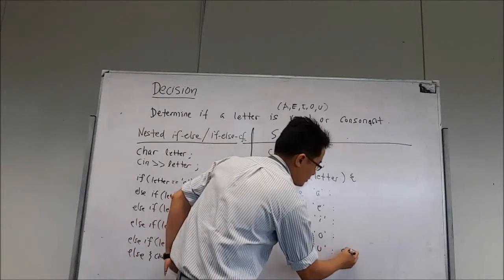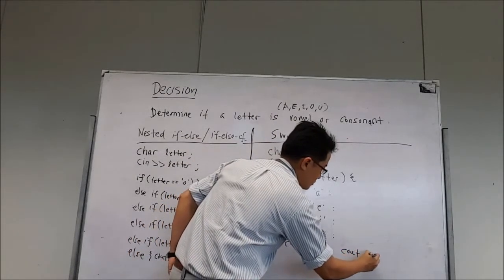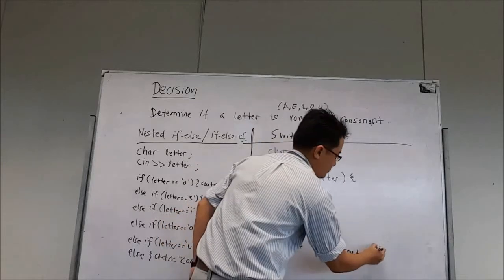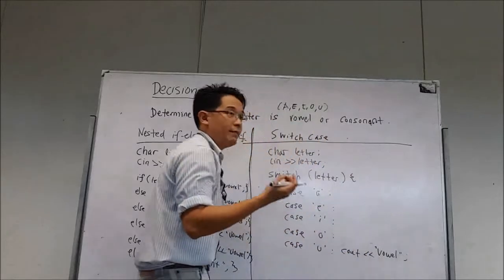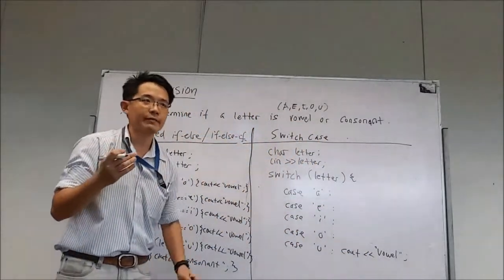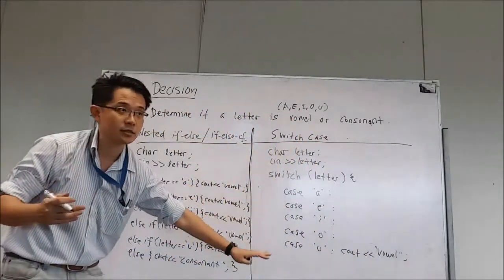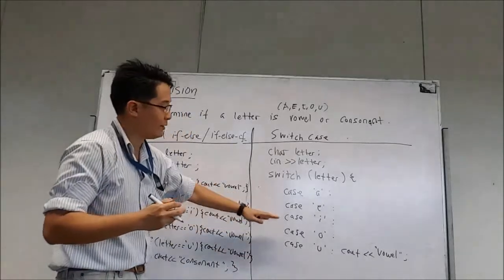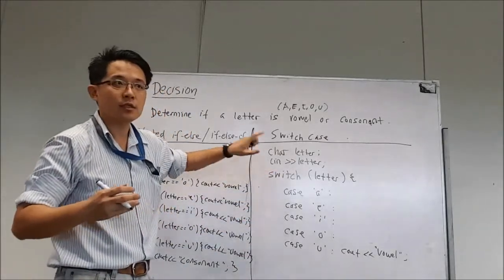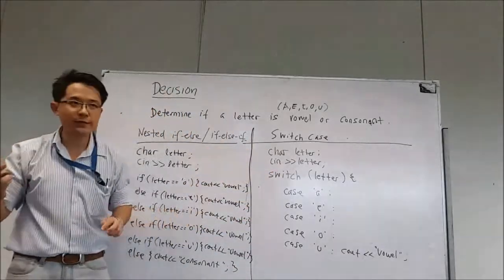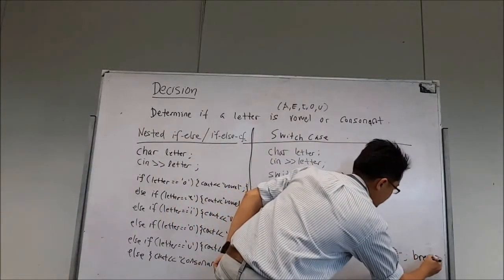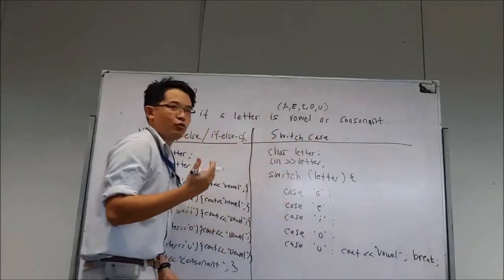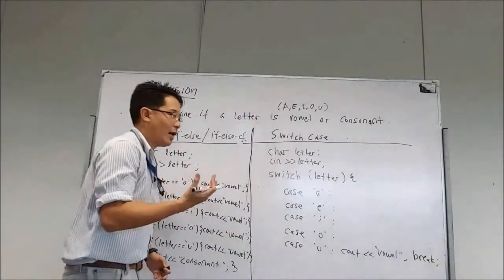Then you will C out vowel and then remember you must break. You must break it because if not you keep on testing the rest. That's why you need a break so that you jump out from the switch. Remember that there will be one or two marks for that. Break, break the switch. Yeah get out of the switch.